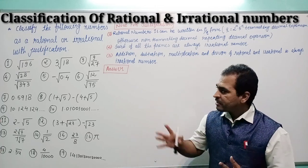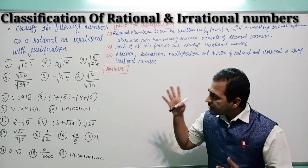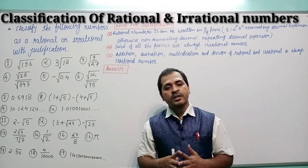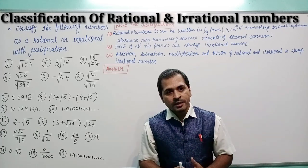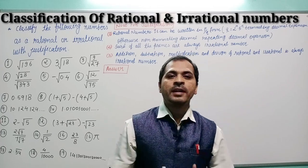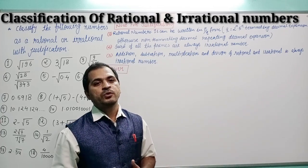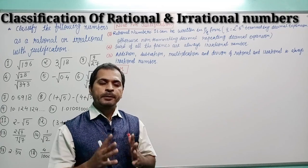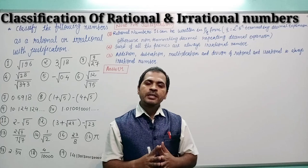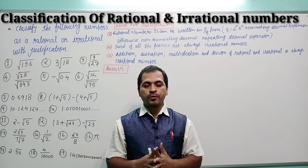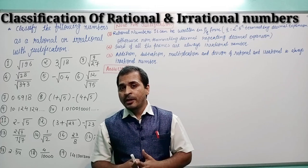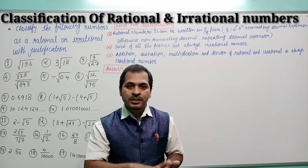There are various examples given here — so many numbers are rational and few numbers are irrational. Whenever you are classifying rational and irrational numbers, keep a few points in mind. First, a rational number is always written in p/q form. If a number cannot be written in p/q form, that number is not rational.